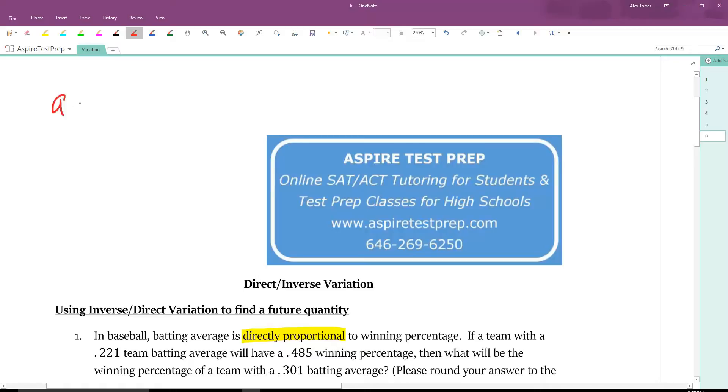If a is directly proportional to b, then the equation is a equals kb. If a is inversely proportional to b, then that's a equals k over b. Or if I said a varies directly with b, that would be the red equation. Or a varies inversely with b, that would be the green equation.